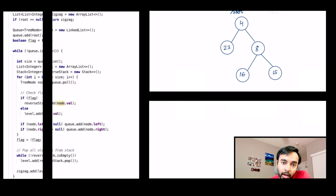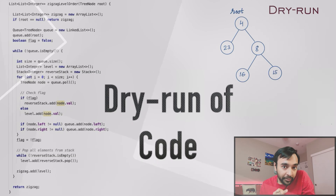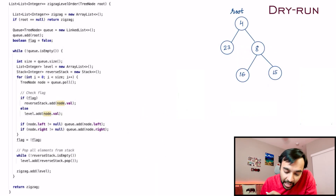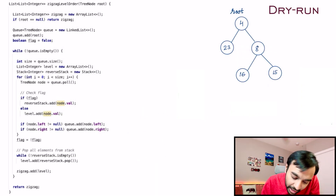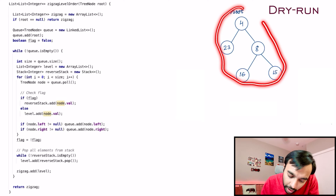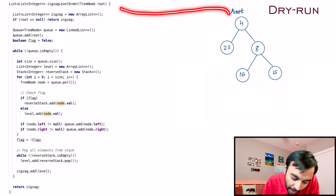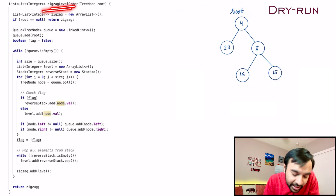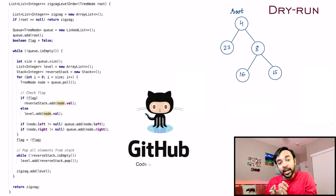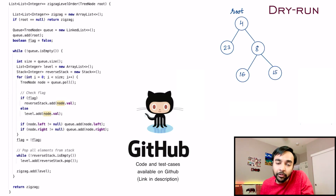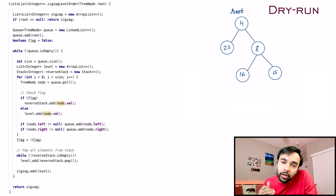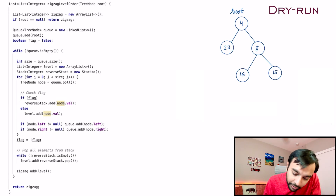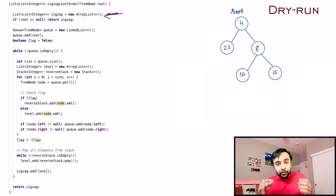Based on this idea let us quickly do a dry run of the code. On the left side of your screen you have the actual code to implement this solution, and on the right I have this binary tree where the root is passed in as an input parameter to the function zigzag level order. This complete code and its test cases are also available on my GitHub profile — you can find the link in the description below.